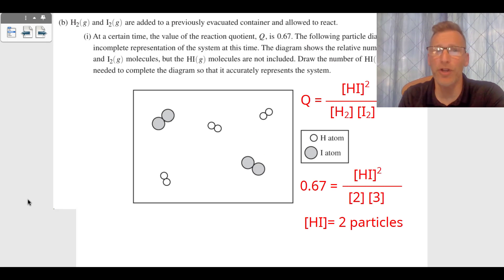Now, Part B is saying we're injecting some of the H2 and the I2. It's starting to move towards equilibrium, and they gave us the quotient, the reaction quotient Q is 0.67. So I took a look at my equilibrium expression, and I took a look at the particle diagram, and can you see there's two moles of the iodine, the I2, and there's three moles of the H2.